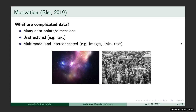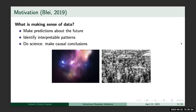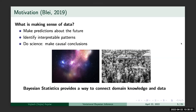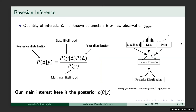For example, for each individual, I have data in different forms — image information, text information, some kind of link. And what does it mean to make sense of it? We would like to make predictions and understand some underlying interpretable patterns, like in regression, knowing what predictors are significant. Since this is a Bayesian class, I don't need to argue that Bayesian methods are a good way to approach these problems.